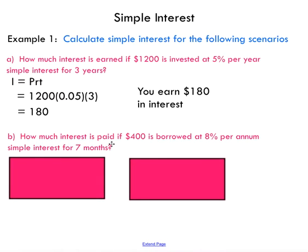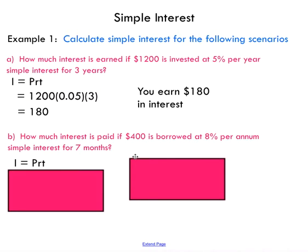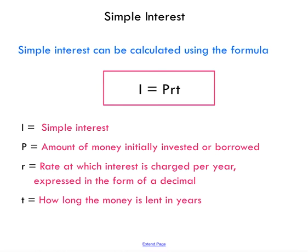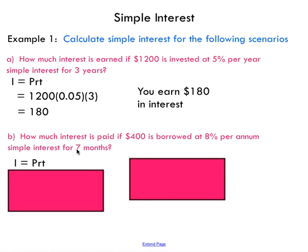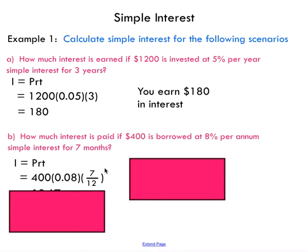Next: how much interest is paid if $400 is borrowed at 8% per annum — that's just another way of saying per year — simple interest, for seven months? The percentage has to be written as a decimal, so we divide by 100. Notice the term is given in months, not years, and our simple interest formula works in years, so we need a slight conversion. Seven months out of a year's 12 months gives us a time of 7/12.